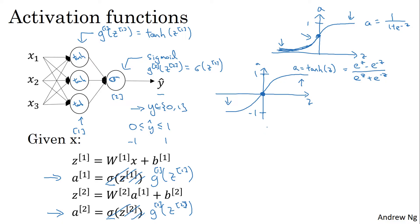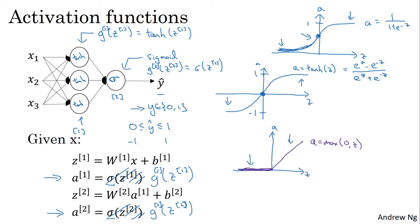One very popular choice in machine learning is what's called the Rectified Linear Unit, or ReLU. The value function looks like this, and the formula is A equals max of 0, z. The derivative is 1 so long as z is positive, and the slope is 0 when z is negative. Technically, the derivative when z is exactly 0 is not well defined, but when you implement this in the computer, the odds of getting exactly z equals 0 are very small, so you don't need to worry about it.